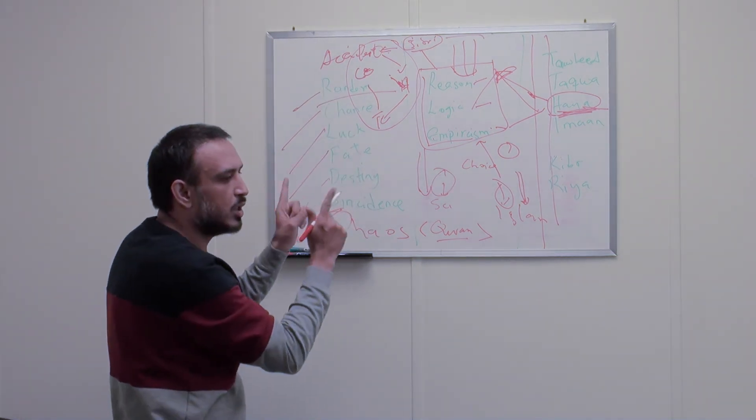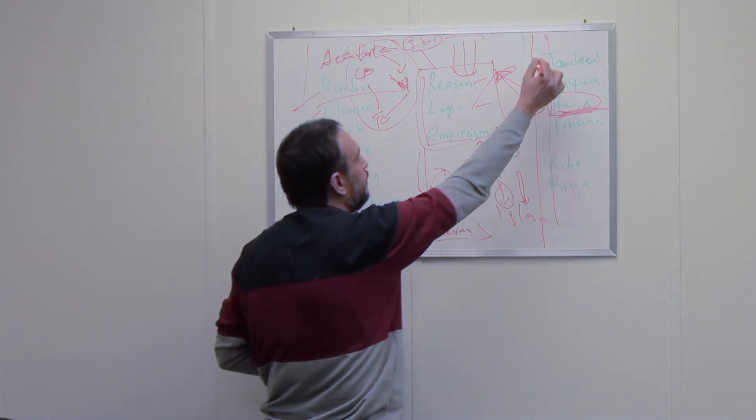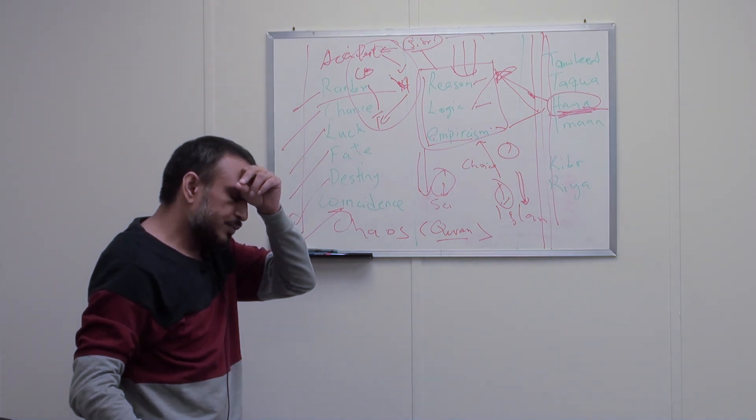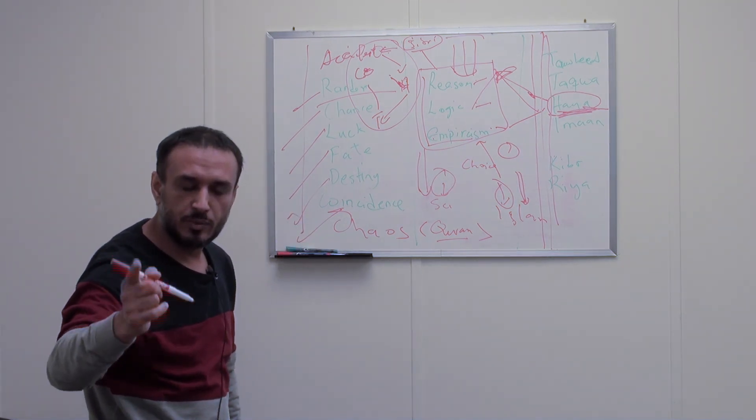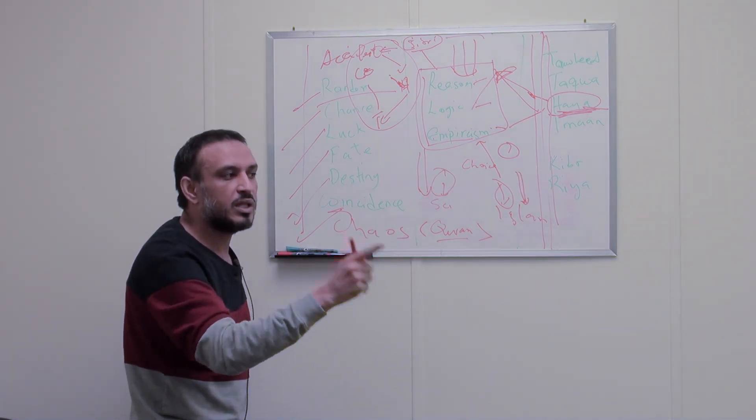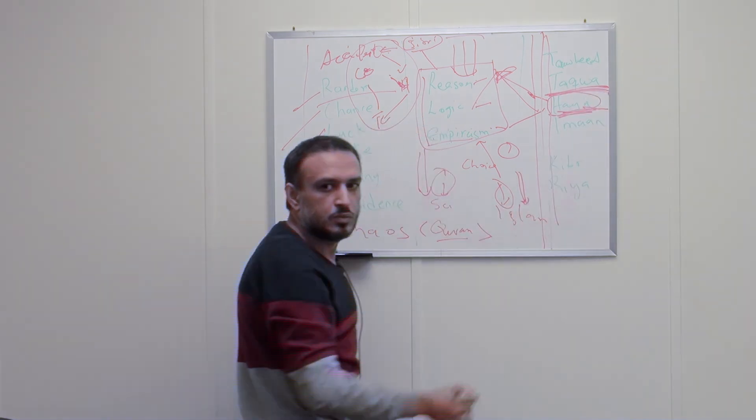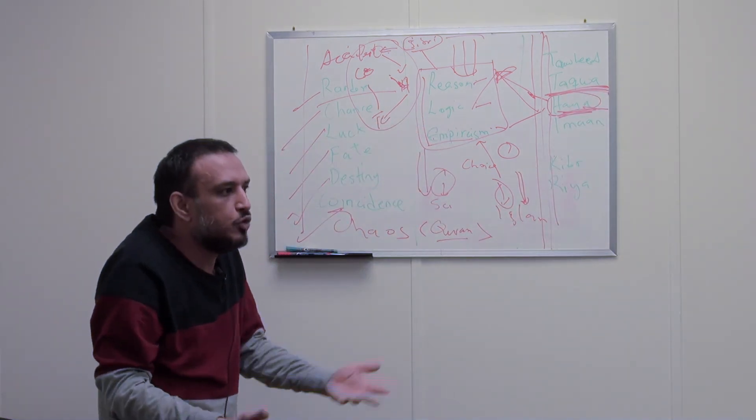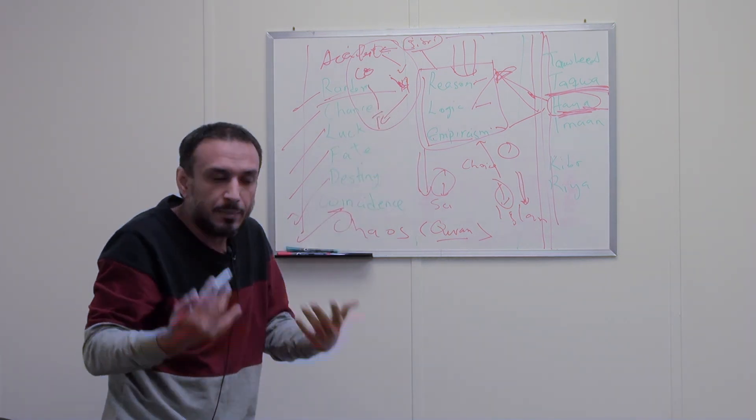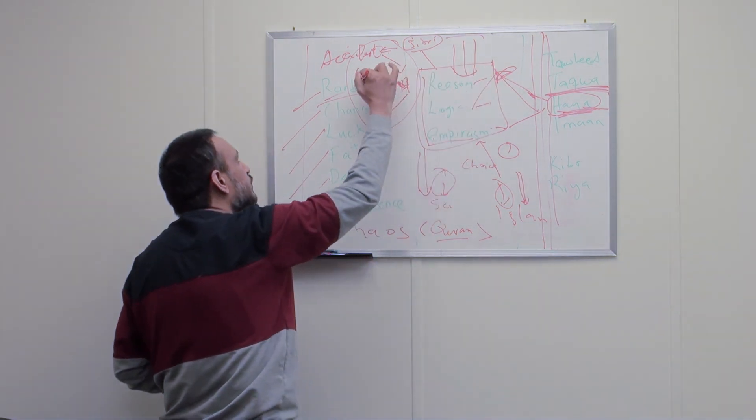The framework, the presupposition here is this. What does Allah tell us to begin with? Alif Lam Meem. Zalik Al-Kitabu la rayba fihi hudan lil-muttaqeen. Presupposition. If you don't have taqwa, if you don't believe in Allah, you believe in randomness. You accept that as your presupposition. How are you going to apply this in this framework?